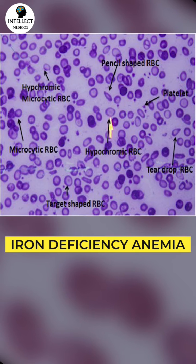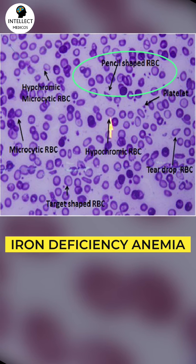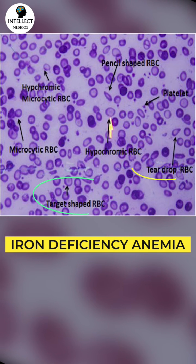The fourth slide is a very important slide of iron deficiency anemia, showing microcytosis and hypochromia. You can also see pencil cells, tear drop cells, and target cells.